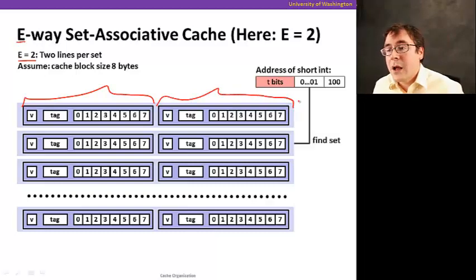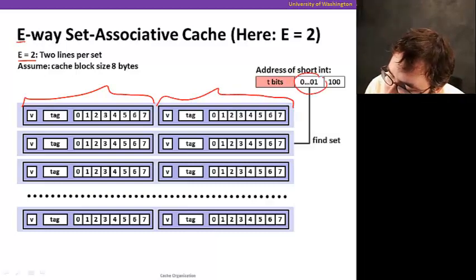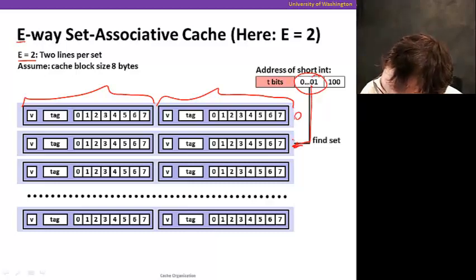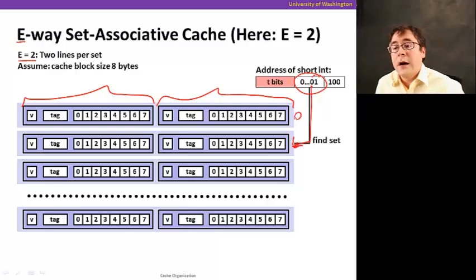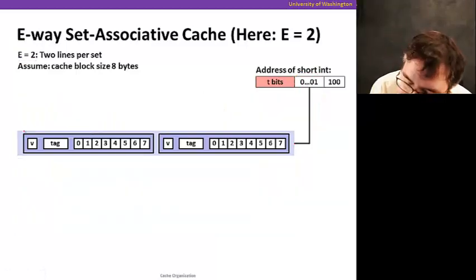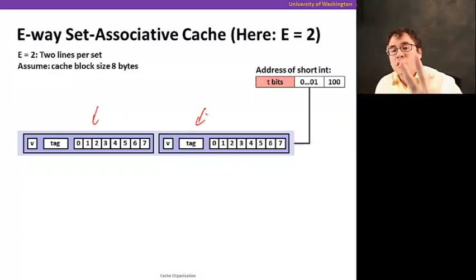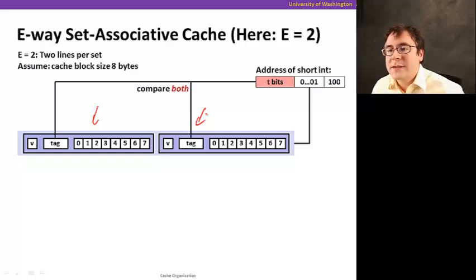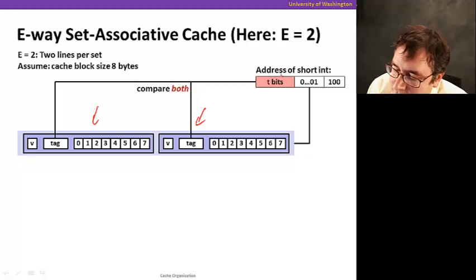What is the first thing we're going to do? Again, we're going to use the middle part of the address to find which set it goes. Let's say that it goes again to set 1. But now, what we're going to do, we're going to select this set here. Now, we are focusing on 2 lines.